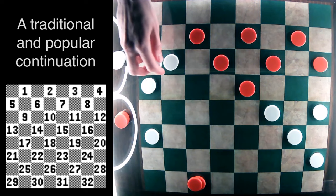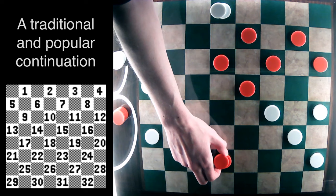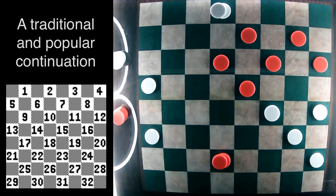Red is going to crown. And white is going to capture the piece. Red is going to attack the piece on 19. And it moves its king to 26.